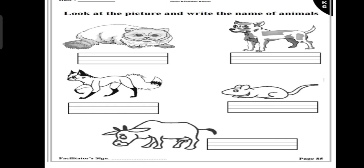Now, you have to look at the picture. You have to identify the picture and you have to write the correct name of that animal. So, first one is cat. C-A-T, cat.